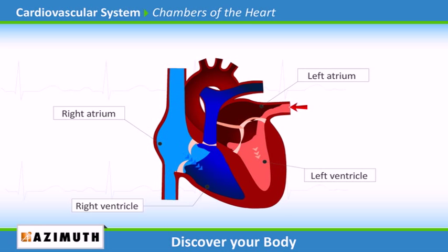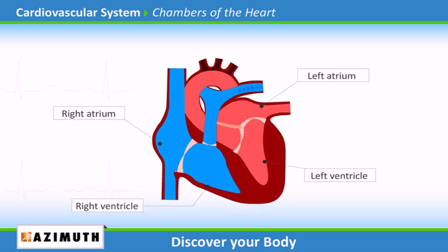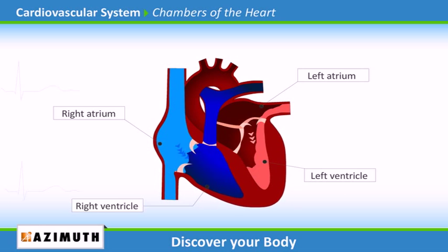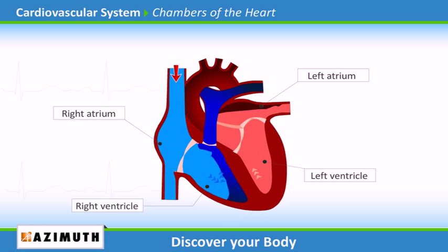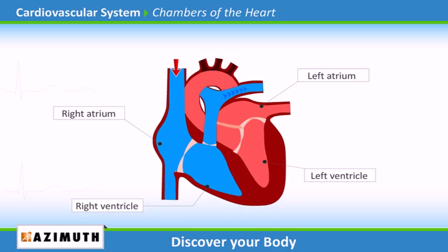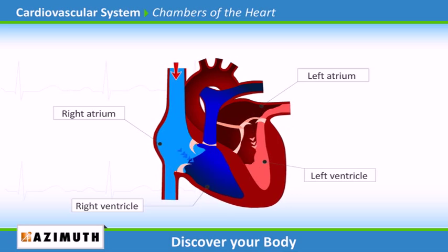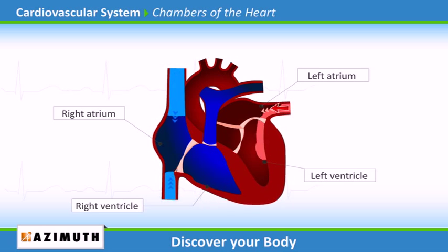The atria receive the blood and the ventricles pump blood out of the heart into the circulatory system to the other parts of the body. The deoxygenated blood from the body is received in the right atrium, and the oxygenated blood is received into the left atrium from the pulmonary veins.